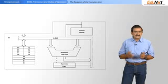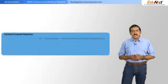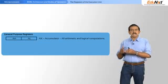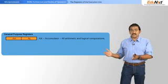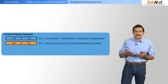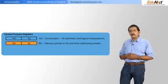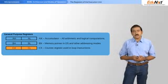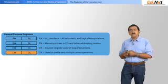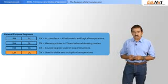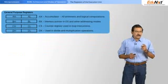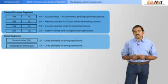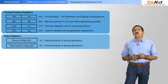The execution unit consists of a bunch of general purpose registers. The AX register is the accumulator — AX is the sum of AL and AH, each of which is an 8-bit register. The BX register is a memory pointer into the data segment. The CX register is a counter register, whose use you'll understand as we go along. The DX register is used specifically for divide and multiplication operations. There are also two special index registers: the source index register and the destination index register, used specifically for string operations.